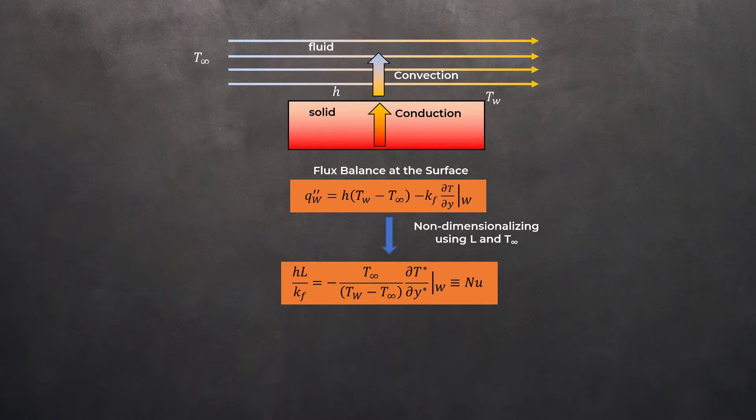Note that Tw, T infinity, H, and Kf are assumed to be constant. The circled term here is generally referred to as the Nusselt number. It is a non-dimensional measure of the convective heat transfer relative to the heat transfer that would occur by conduction into the fluid.